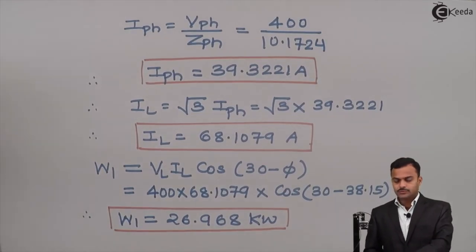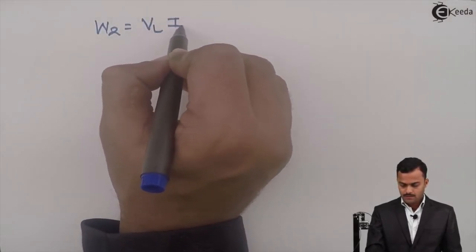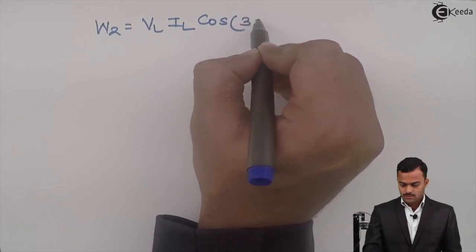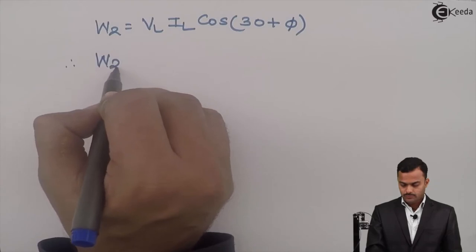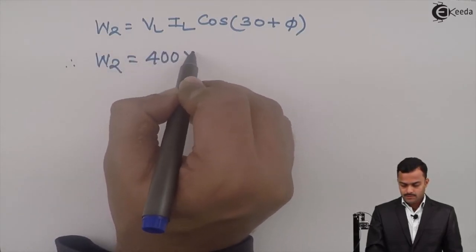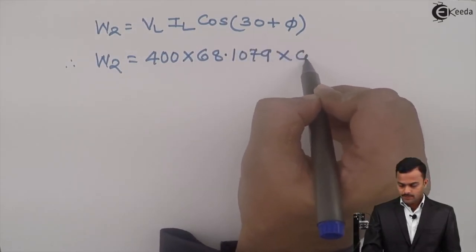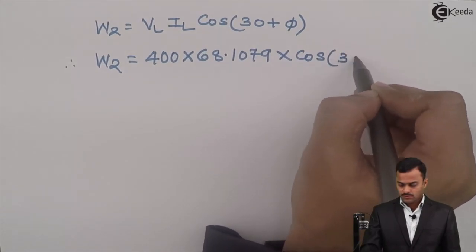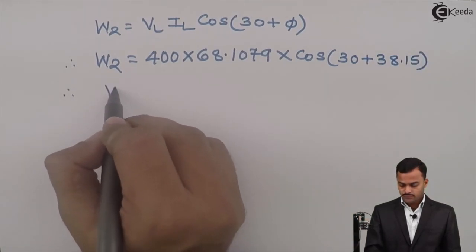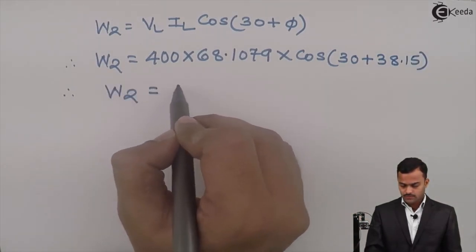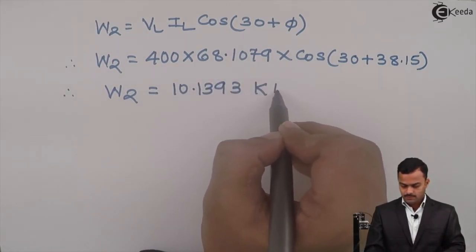Similarly, W2 will be VL times IL times cos(30 plus phi). So W2 will be 400 multiplied by 68.1079 multiplied by cos(30 plus 38.15). Solution gives W2 equal to 10.1393 kilowatts.